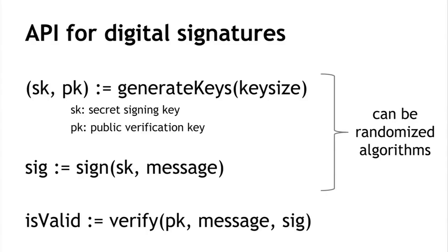The digital signature API has three operations. First, generateKeys(keysize) produces SK (a secret signing key, kept private) and PK (a public verification key, given to everyone). Second, sign(SK, message) returns SIG — a bit string representing your signature. Third, verify(PK, message, SIG) returns yes or no. The first two can be randomized algorithms; verification is always deterministic. GenerateKeys must be randomized since it ought to generate different keys for different people.